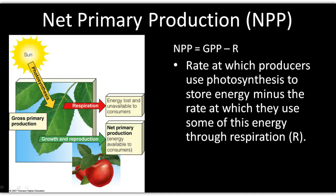NPP — net primary productivity — is the difference in energy. It is the difference between the amount of energy that a primary producer takes in and the amount of energy it has to use for respiration. The NPP is the energy that it actually gets to store and become plant material or fruit — whatever we want to look at. So the NPP is what it actually keeps and stores.